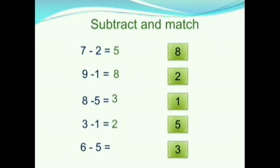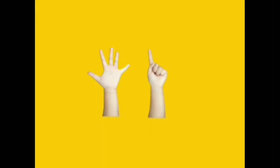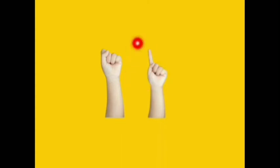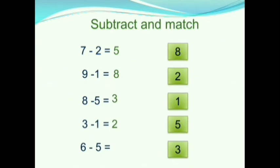In the last question, we have 6 minus 5. The first number is 6, so here we have 6 fingers. The second number is 5, so we will fold 5 fingers. How many fingers are left? 1 finger is left. So we will write 1. Therefore, 6 minus 5 is 1. Now, we should match the answers on the right side.